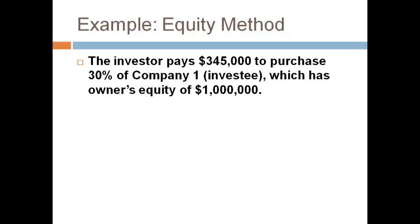In this example, the investor owns 30% and has significant influence, so the equity method must be used to account for the investment. The investor pays $345,000 to acquire 30% ownership. The total owner's equity of the investee is $1 million at the time of the purchase.